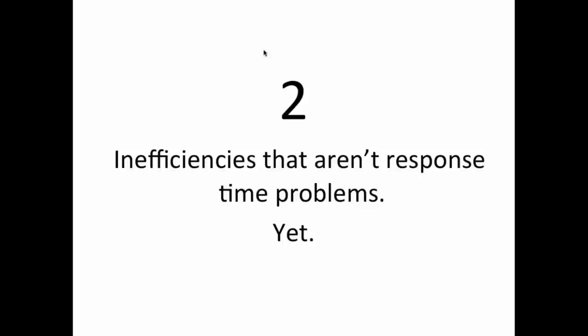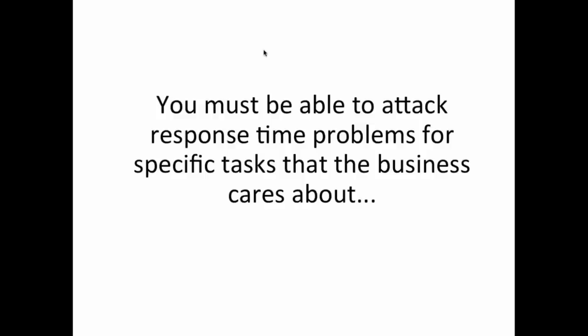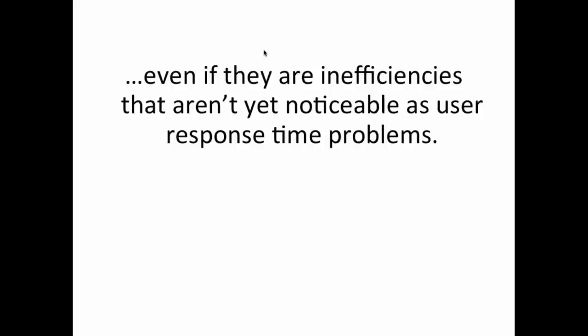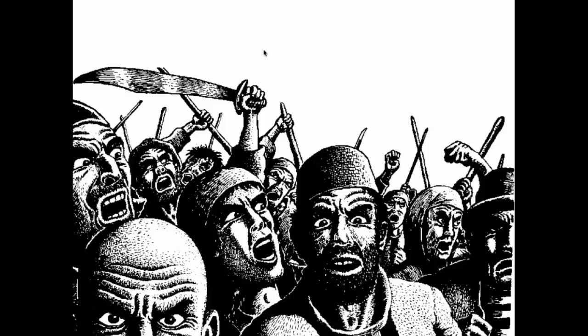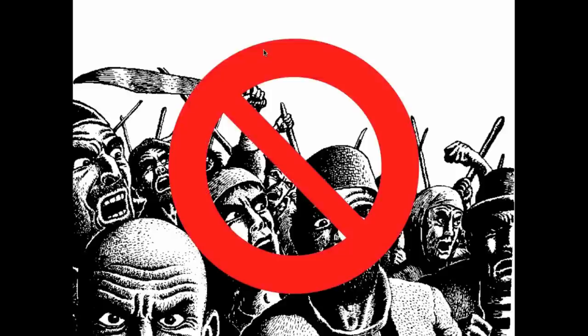This happens very frequently. We often see problems hide from us through development, QA, and even load testing phases. But when we put code in production and get under real load and real stress, problems start to appear. We want to attack both types of problems. Even if inefficiencies aren't noticeable as response time problems yet, they are problematic. We don't want users and management clamoring when everyone's using the system and things get really slow during peak hours.